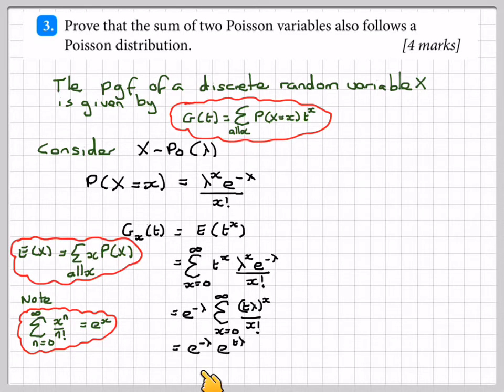So we have e to the minus lambda times e to the t lambda, which is e to the minus lambda plus t lambda, which gives me the probability generating function for x, which is e to the minus lambda times (1 minus t).